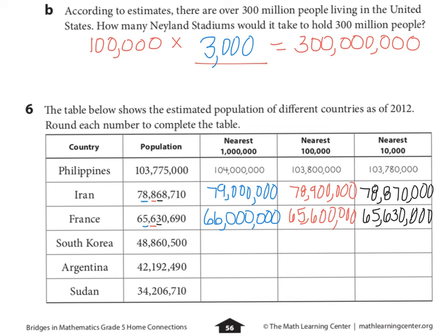Looking at the next one: rounding to the nearest million — I look to the right, I see an eight, so it increases by one — forty-nine million. Rounding to the nearest hundred thousand: I look to the right, I see a six — it increases by one — so forty-eight million, nine hundred sixty thousand. Rounding to the nearest ten thousand: I see a six there; look to the right, I see a zero — stays the same — forty-eight million, eight hundred sixty thousand.